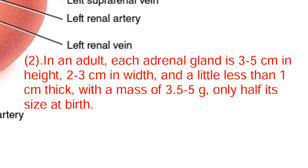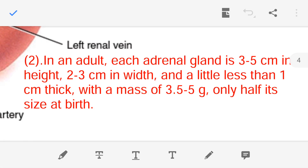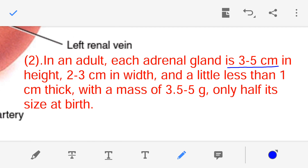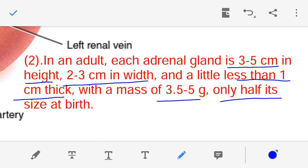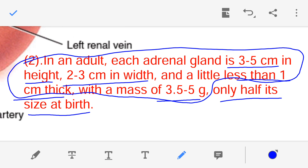In an adult human being, each adrenal gland has a height of 3 to 5 centimeters, a width of 2 to 3 centimeters, and a thickness of less than 1 centimeter. The mass of the adrenal glands is 3.5 to 5 grams. At birth, the gland is only half this size — all the measurements of height, width, thickness, and mass are half of the adult values at birth.